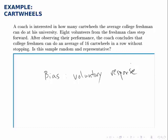Voluntary response bias also comes into play in surveys that have questions where certain responses are more favorable than others.